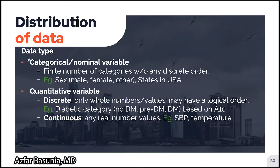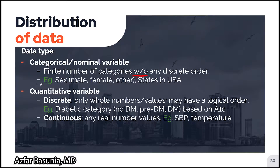There are two important data types to know for your USMLE exams. First is the categorical or nominal variable. Second is the quantitative variable. In a categorical or nominal variable, we have a finite number of categories without any discrete order — and this is important to know. Examples of categorical or nominal variables include the sex of the patient, which may be categorized as male, female, or other.